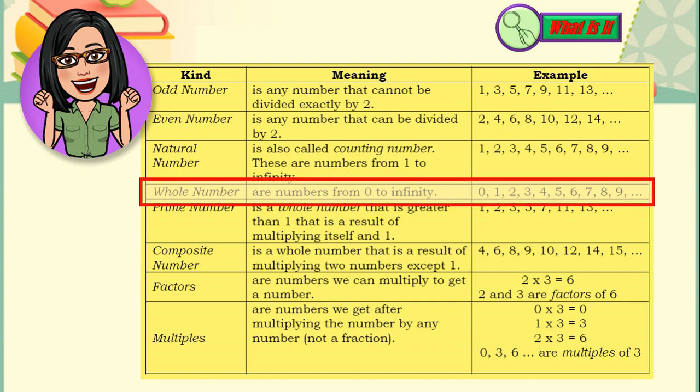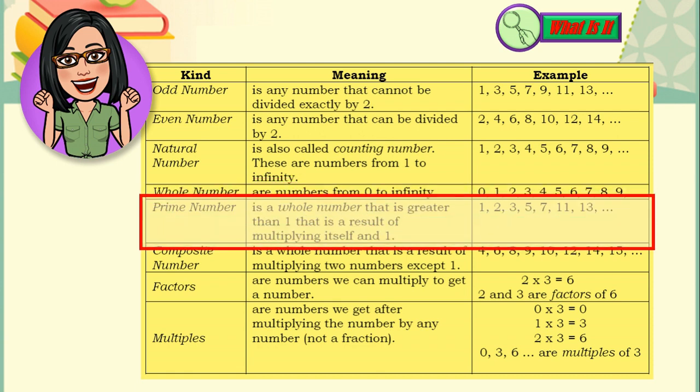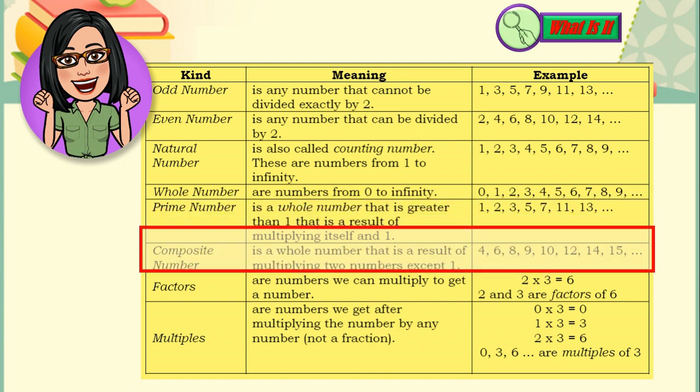Now, a whole number are numbers from 0 to infinity. So we have 0, 1, 2, 3, 4, 5, 6, 7, 8, 9, and so on. We also have prime number is a whole number that is greater than 1, which is a result of multiplying itself and 1. For example, 1, 2, 3, 5, 7, 11, 13, and so on.